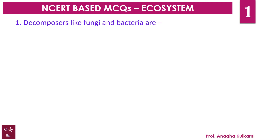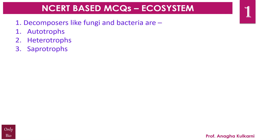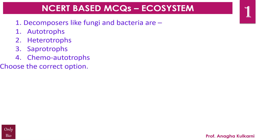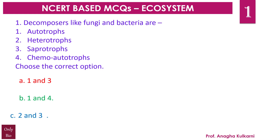Question number 1. Decomposers like fungi and bacteria are: (1) autotrophs, (2) heterotrophs, (3) saprotrophs, (4) chemoautotrophs. Options: A. 1 and 3, B. 1 and 4, C. 2 and 3, D. 1 and 2. The correct answer is C — 2 and 3. Decomposers like fungi and bacteria are either called heterotrophs or saprotrophs.